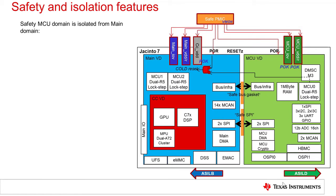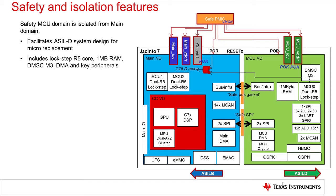The Jacinto 7 safety MCU domain is designed to operate in isolation from the rest of the SoC device, referred to as the main domain. This safety MCU is designed to target ASIL-D system designs. It contains a lockstep R5 processor, which acts as the primary safety master in the system, as well as the DMSC M3, which manages device configuration, and a full set of peripherals and DMA.